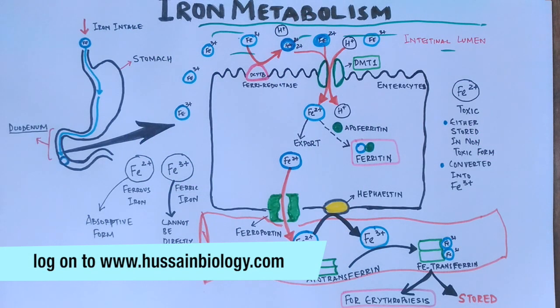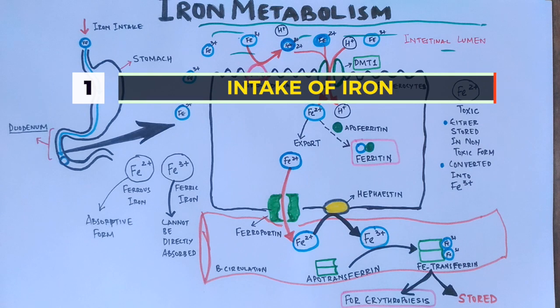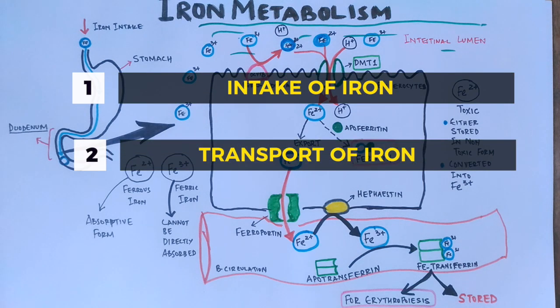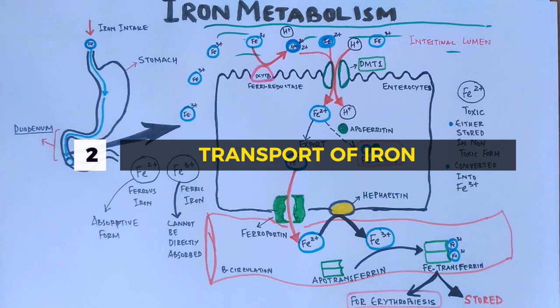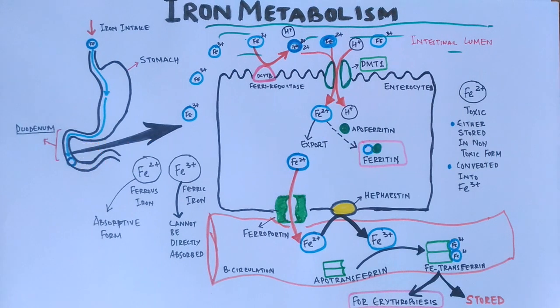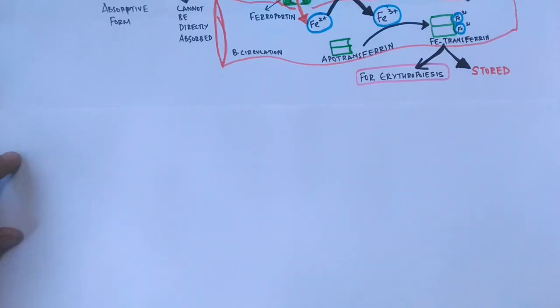In the previous video, we discussed iron metabolism where we covered the first two steps: the intake of iron and its transport to the enterocytes up to the blood circulation. This is the extended part of iron metabolism, which will include the storage and recycling of iron ions in our body. So let's get started.